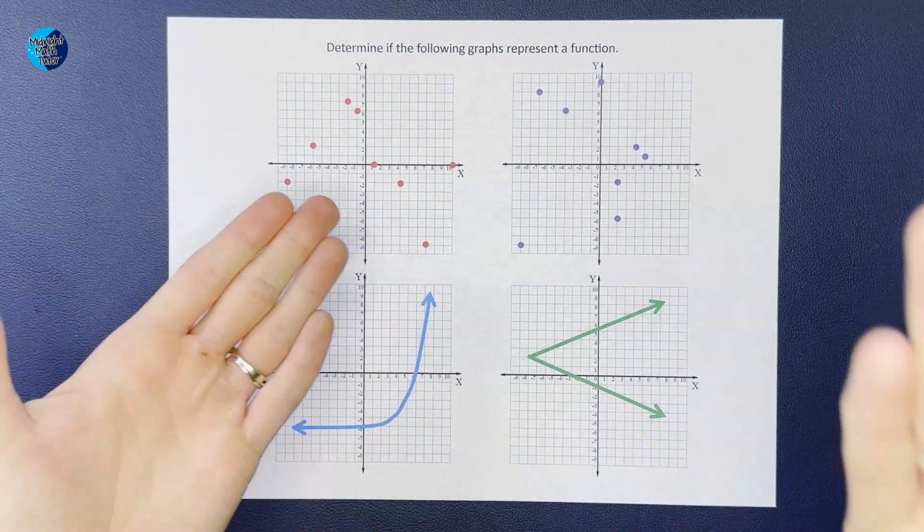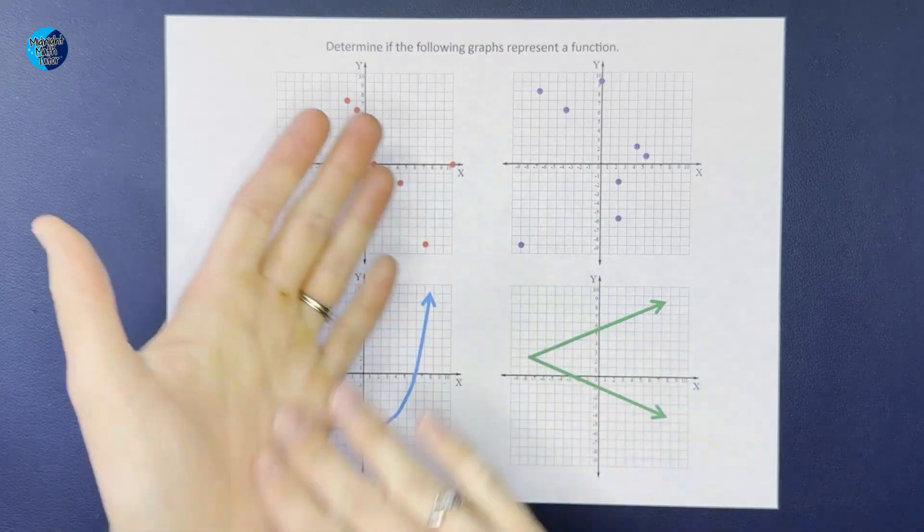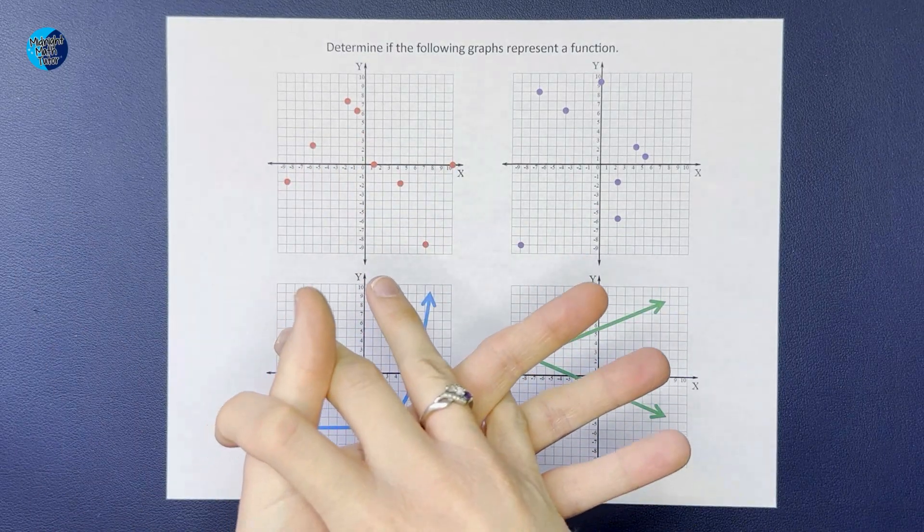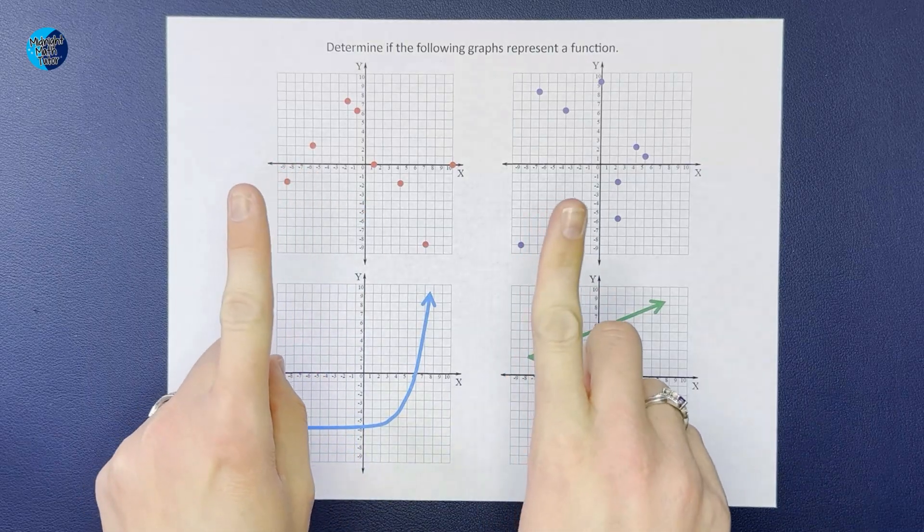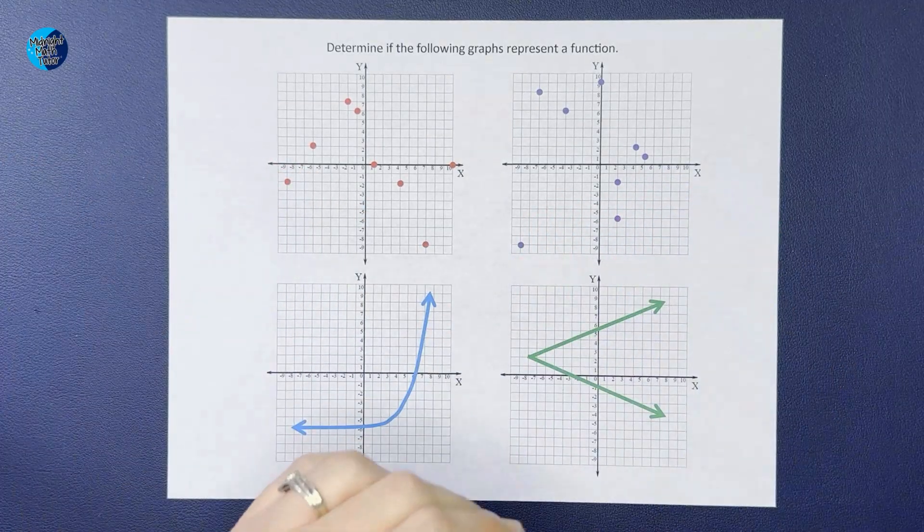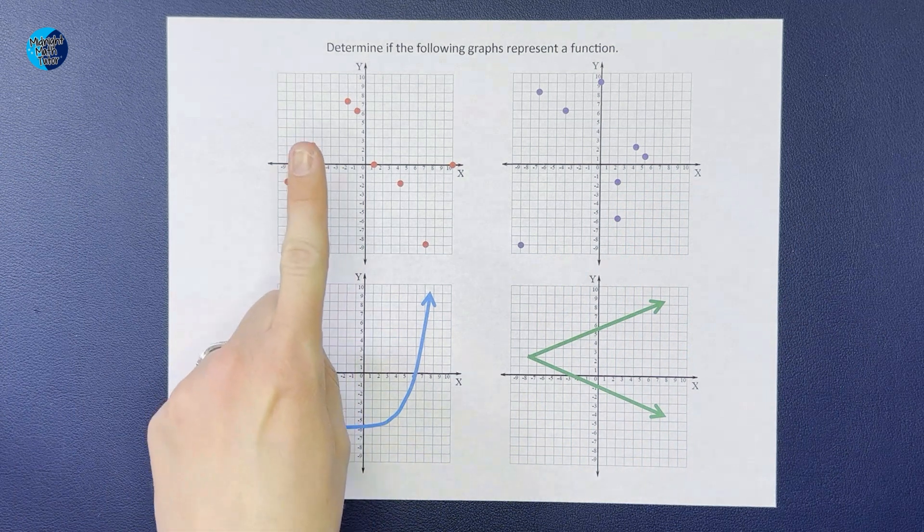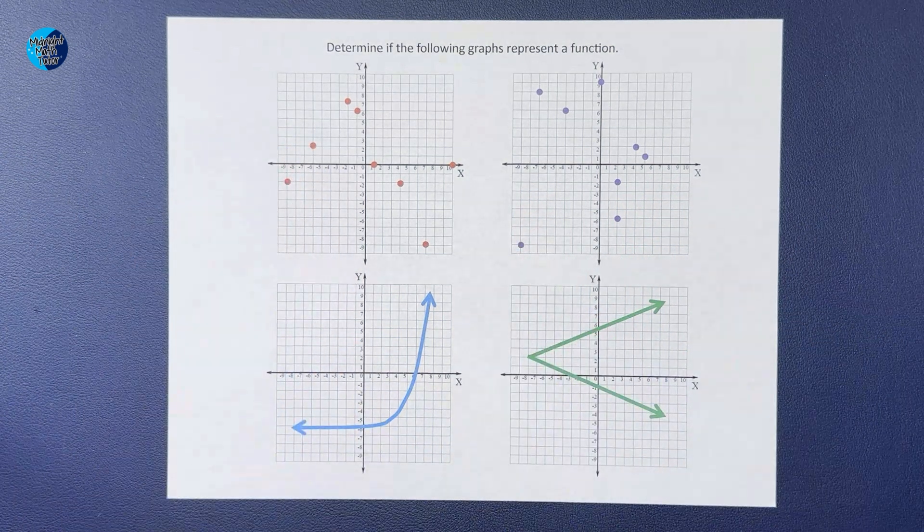Now a function is a special type of relation, a special type of relationship between those numbers where each input only has one output. If that feels confusing, it just means when every x has one y.